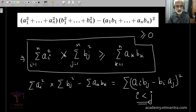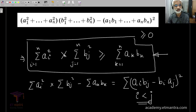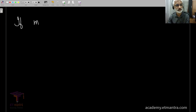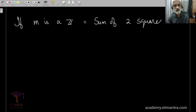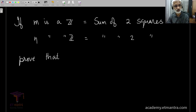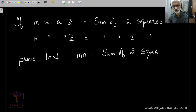Let's conclude with one very popular example using this formula, just to reinforce it in our minds. We'll have a separate big lesson on applications of the Cauchy-Schwarz inequality. The problem is: if m is an integer equal to the sum of two squares, and n is also an integer equal to the sum of two squares, then prove that the product mn is also equal to the sum of two squares.